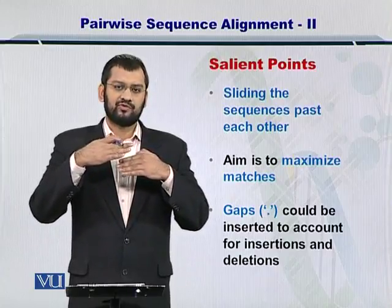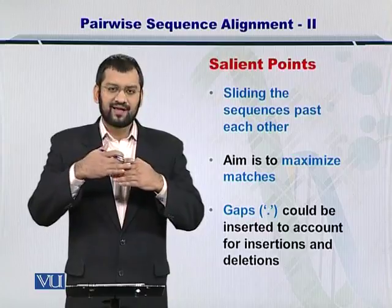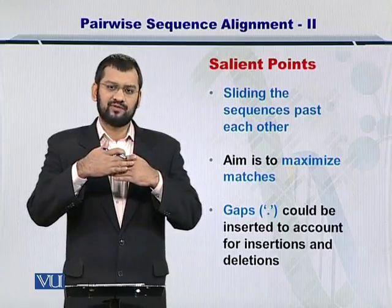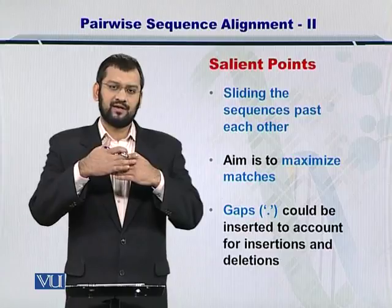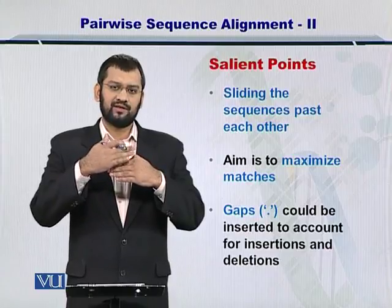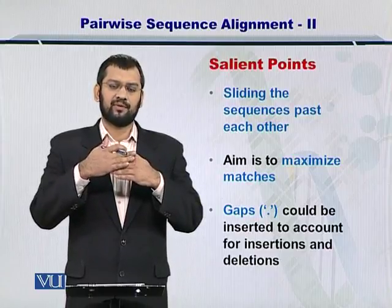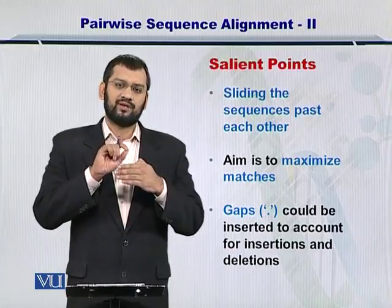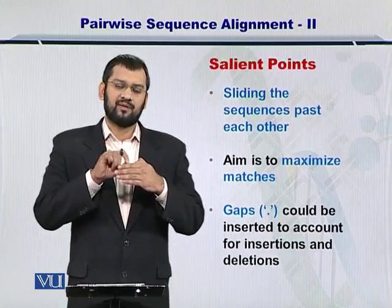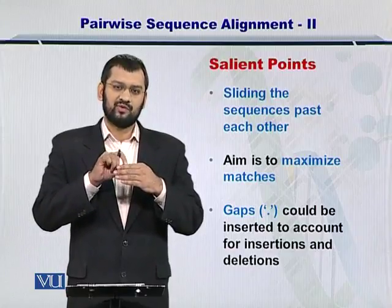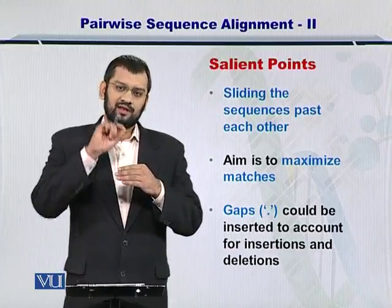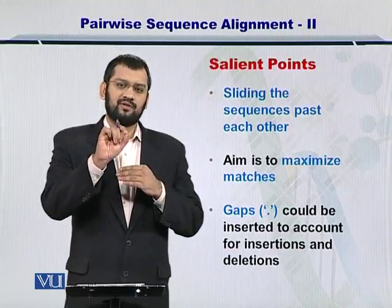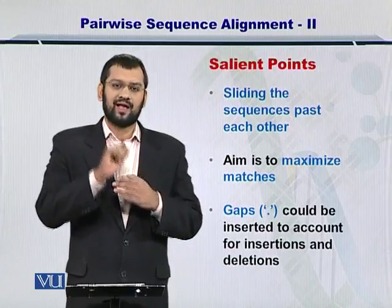Once you do that, you try to maximize the matches between these two sequences. During this maximization of the matches, if there is a situation where there is an extra amino acid or nucleotide in one sequence, then in the corresponding sequence you place a dot. This is called a gap.